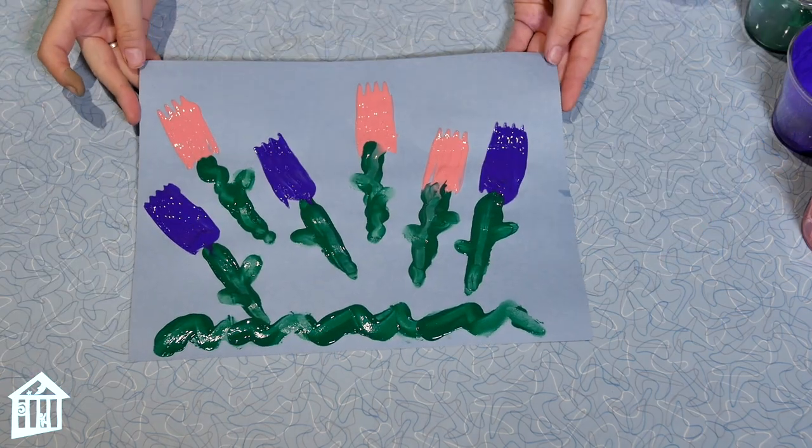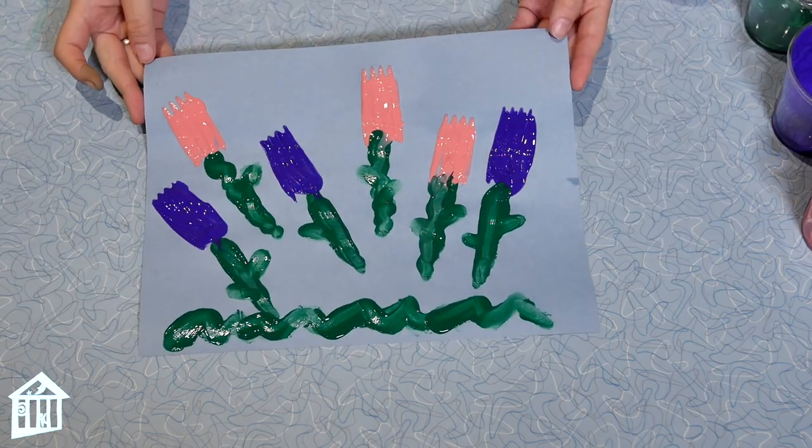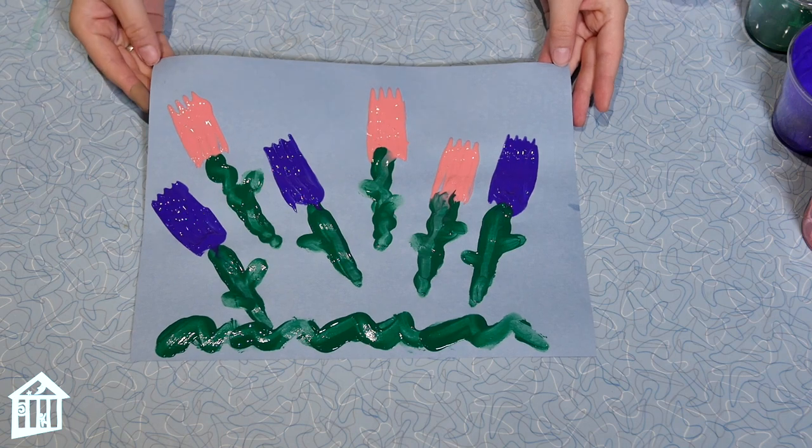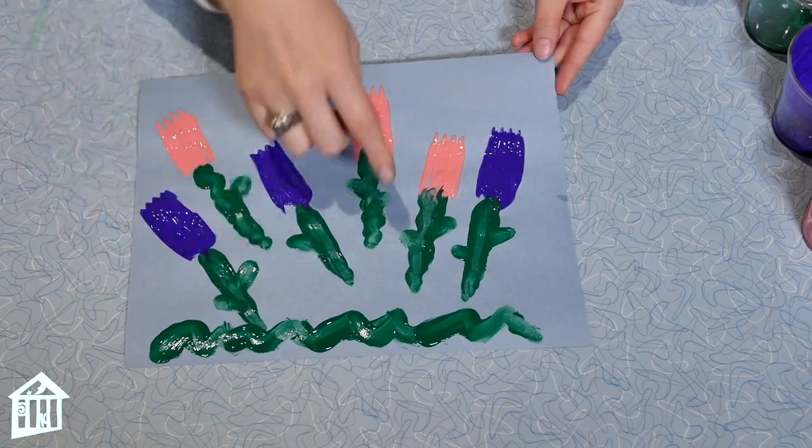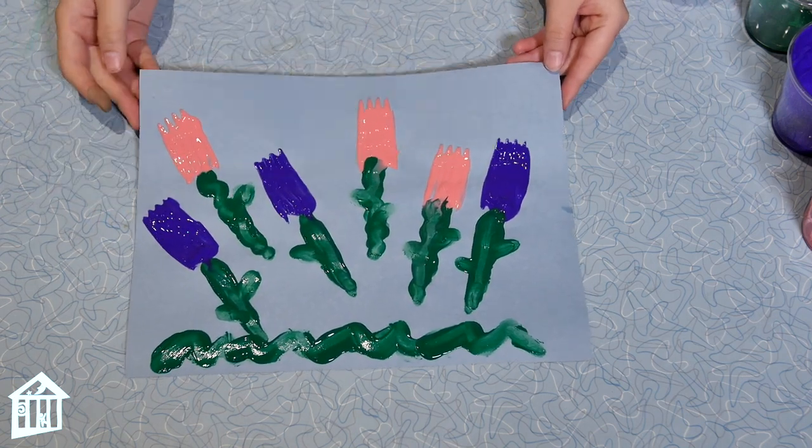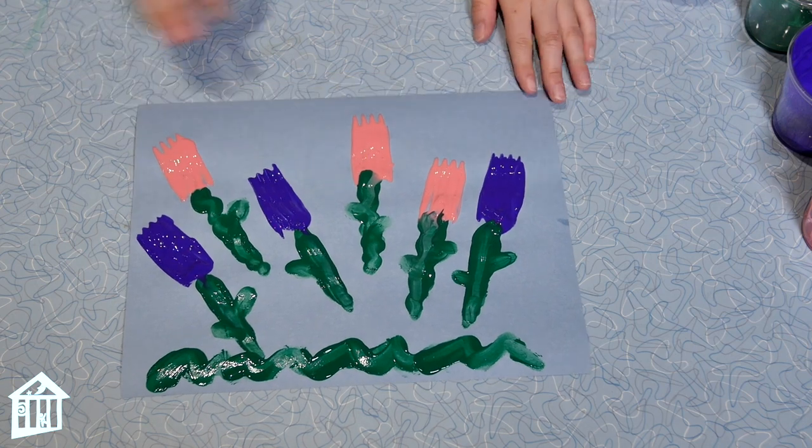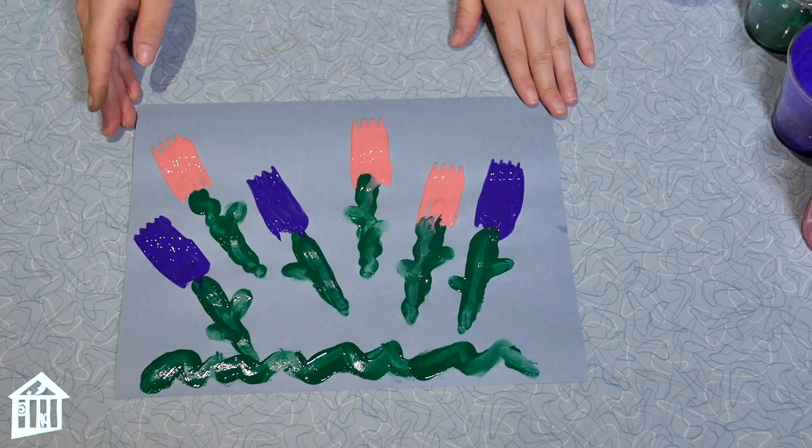And there you have your plastic fork art. Tulip flowers with the colors purple and pink and your grass and your stems. And then if you want to add more details to it feel free to add a sun and some clouds. You can do whatever you want.